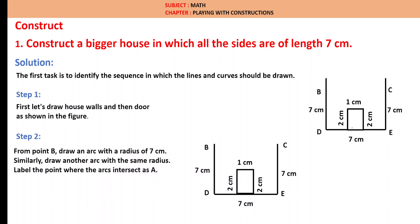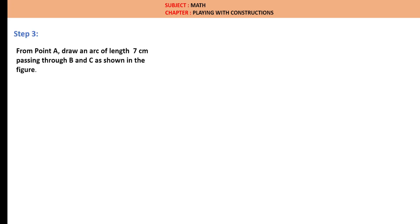Step 2: From point B, let us draw an arc of radius 7 cm. Similarly, from point C, let us draw one more arc with the same radius and it intersected the previous arc. Let us notate the intersecting point as A. Let us draw an arc of length 7 cm passing through B and C as shown in the figure, passing through B and C.